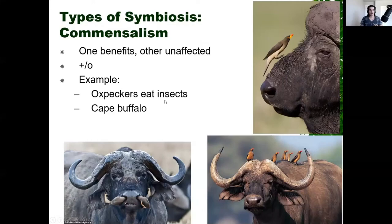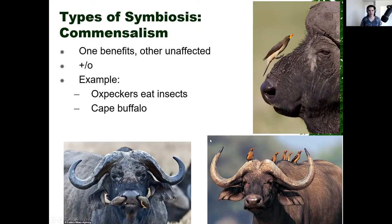Commensalism is a type of relationship where one thing benefits and the other is unaffected — no real benefit or harm done to one party, while the other reaps some benefit. For example, oxpeckers are birds that feed off of insects, and cape buffalo don't really care if there are insects on them. Oxpeckers will live on the cape buffalo eating insects all day, while the cape buffalo are unaffected. Commensalism is when one thing benefits and something else is in a neutral state — no positive or negative effects.